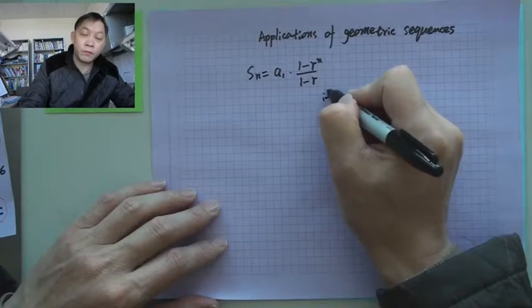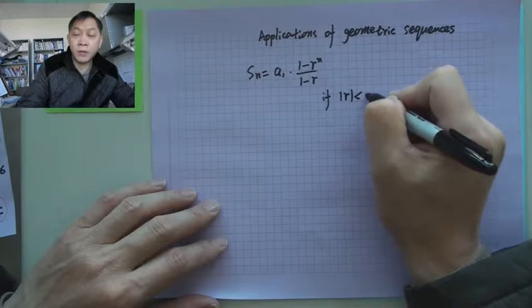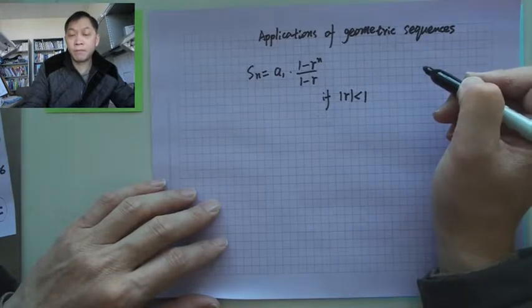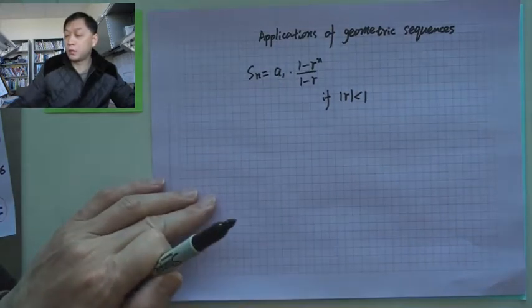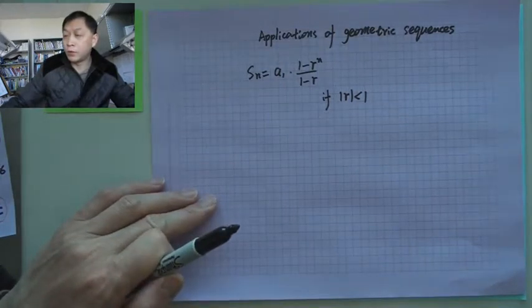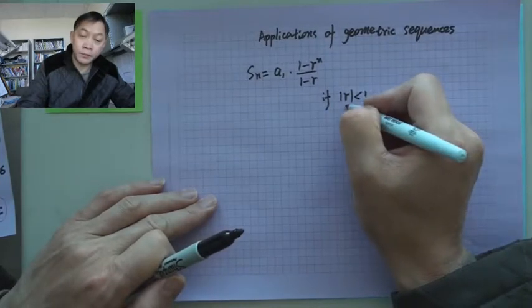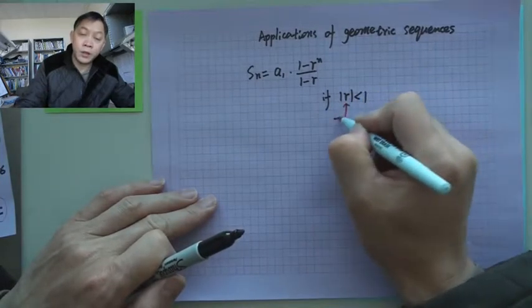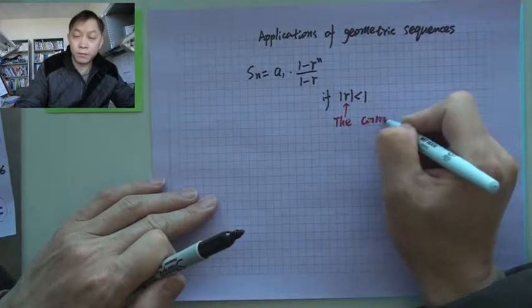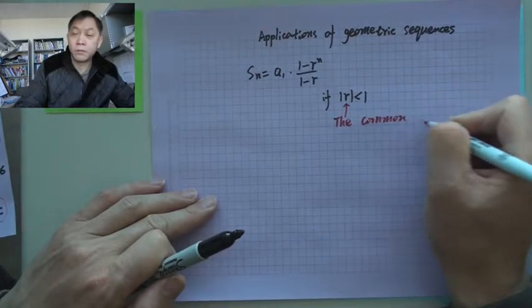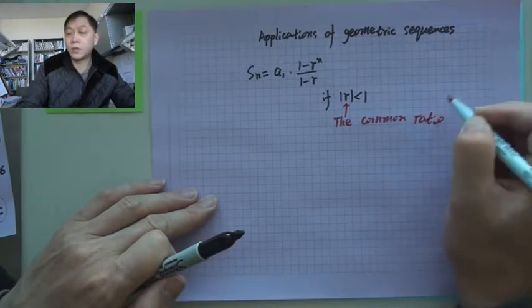If the absolute value of r is less than 1, this r is the common ratio. You can put a remark here if you want. r is the common ratio.